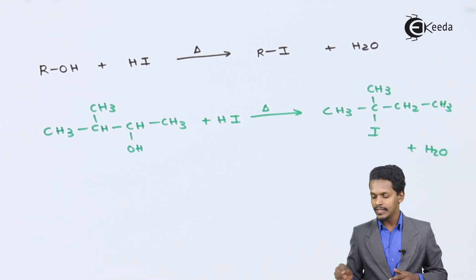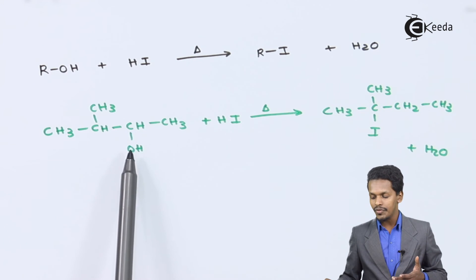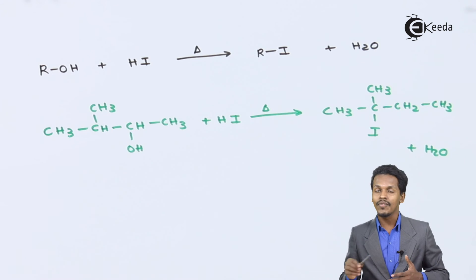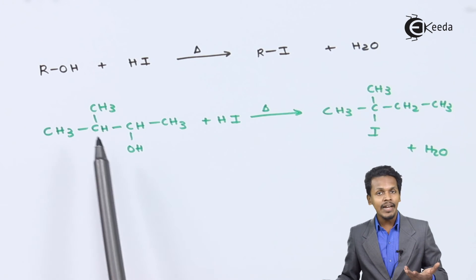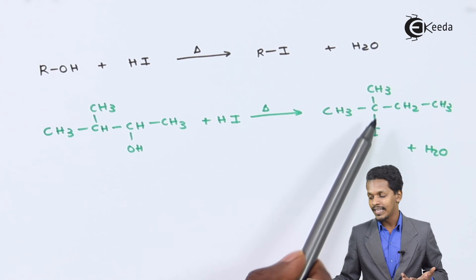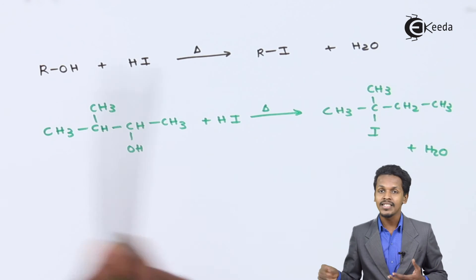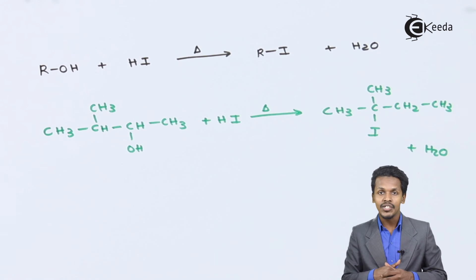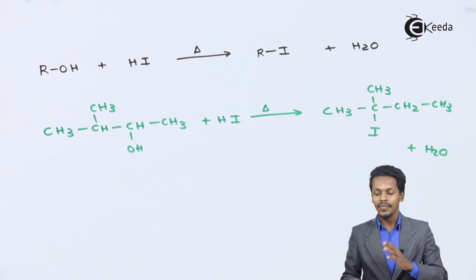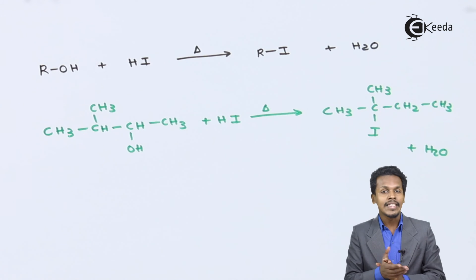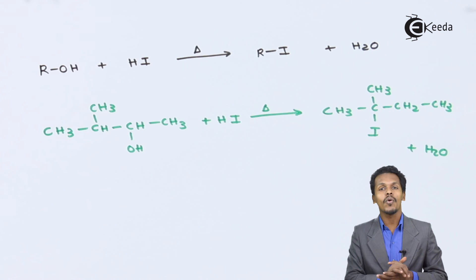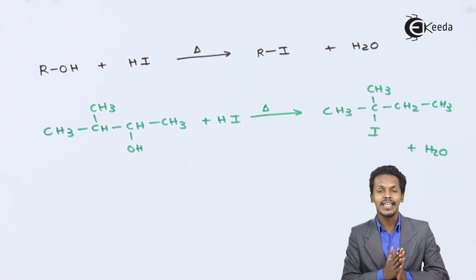If we observe here, the OH is on a secondary carbon atom, so the substitution reaction should take place on that carbon. However, the iodide is found attached to the tertiary carbon atom. The reason is that formation of tertiary alkyl iodide is more favored compared to the secondary one. This was the reaction of alcohol with hydrogen halides. Thank you friends for watching — I hope you understood clearly and I will see you next time.